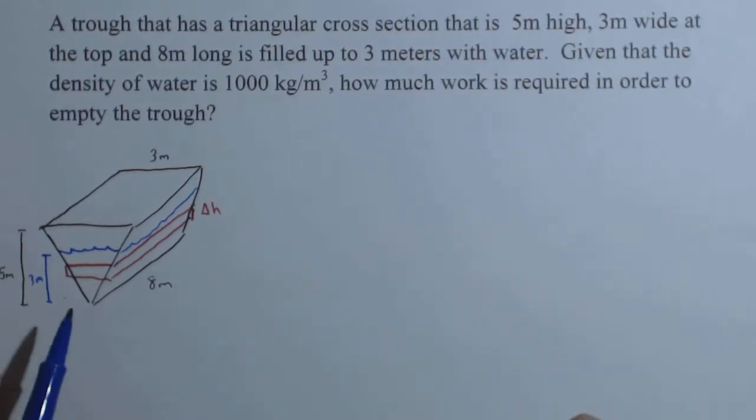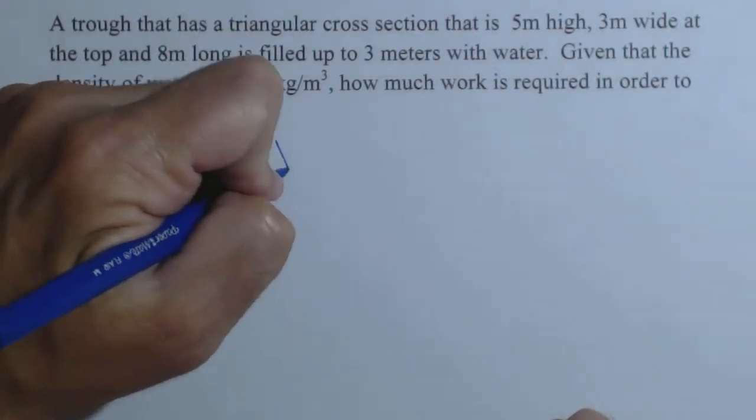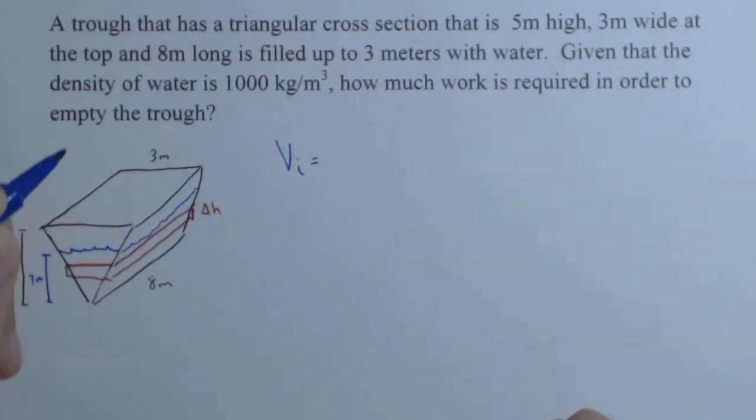First things first, we know we're going to want the work to move the i-th slice. To get the work, we need the force on the i-th slice. To get the force, we need the mass on the i-th slice. To get the mass, we need the volume of the i-th slice. So let's start there, the volume of the i-th slice.